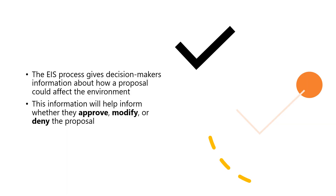The EIS process gives decision makers information about how a proposal could affect the environment. This information will help inform whether they approve, modify, or deny the proposal.